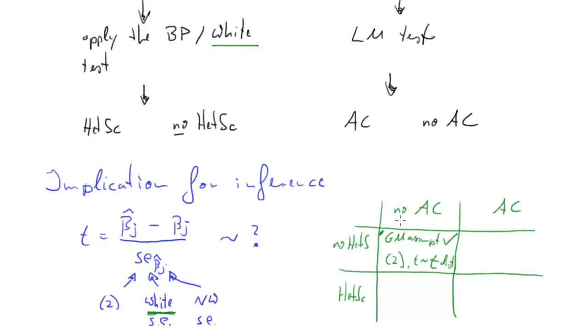Now, what happens, for instance, if we still have no autocorrelation, but we find heteroscedasticity? In this case, we have to calculate the standard errors as per White. We need to calculate White standard errors. And in this case, the t-test, how is it distributed? It is normally distributed, but importantly standard normal. I haven't written down how many degrees of freedom for the t-distribution, but you know that. We use the White standard errors and the t-test is asymptotically normally distributed, importantly asymptotically.